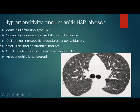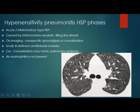In hypersensitivity pneumonitis, there are three phases: acute, subacute, and chronic — or sometimes divided into inflammatory type and fibrotic type. In the acute inflammatory type, seen on CT scan, this is caused by inflammatory exudate filling the alveoli. The histopathology shows inflammatory exudate filling the alveoli, seen on CT as ill-defined centrilobular nodules and some non-specific ground glass or consolidation. The centrilobular nodules do not reach the subpleural space — they spare the subpleural space. On chest X-ray, there is consolidation that may mimic pulmonary edema, but without cardiomegaly and pleural effusion.